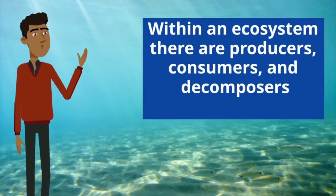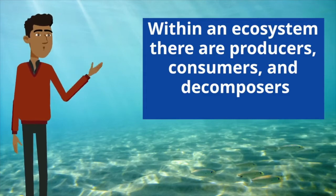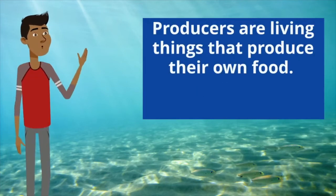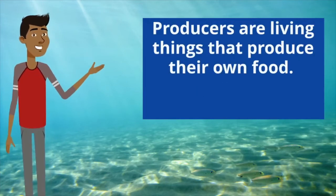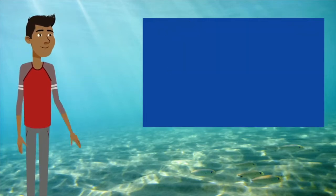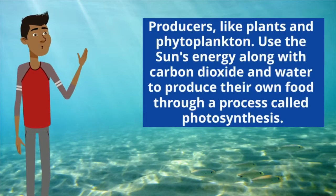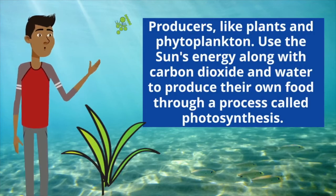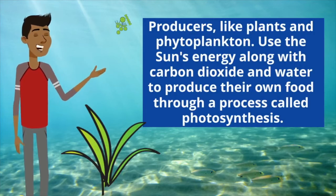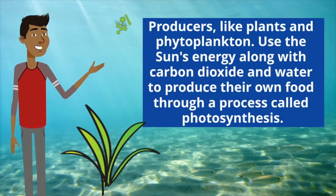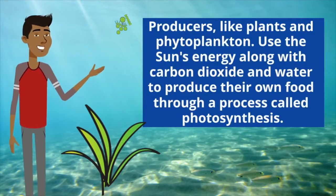Within an ecosystem, there are producers, consumers, and decomposers. Producers are living things that produce their own food. Producers like plants and phytoplankton use the sun's energy along with carbon dioxide and water to produce their own food through a process called photosynthesis.